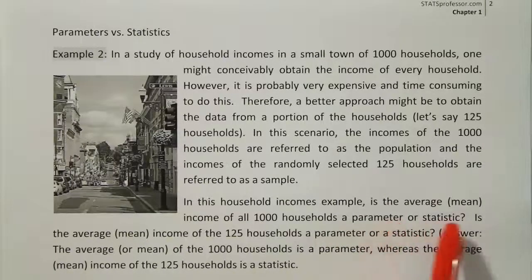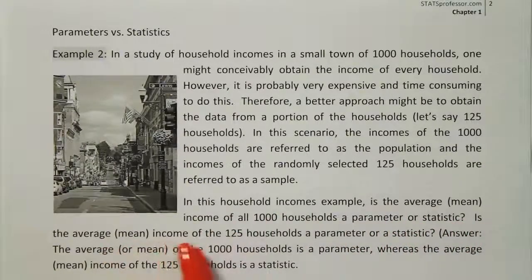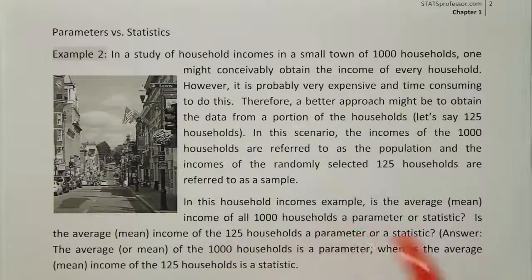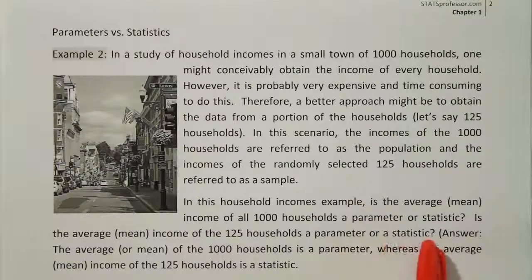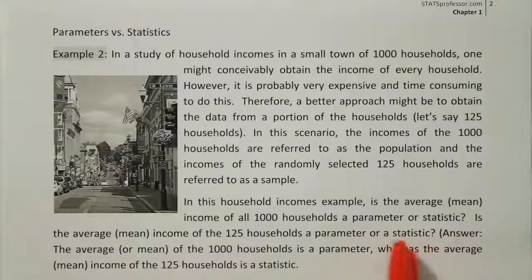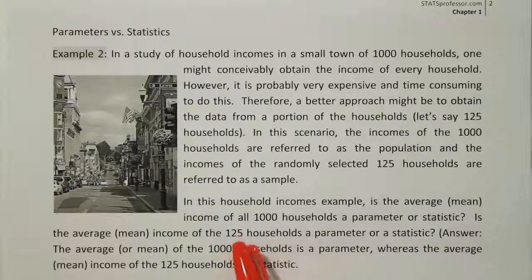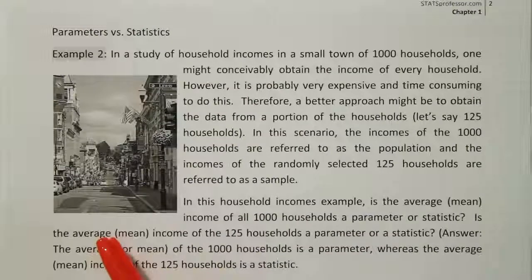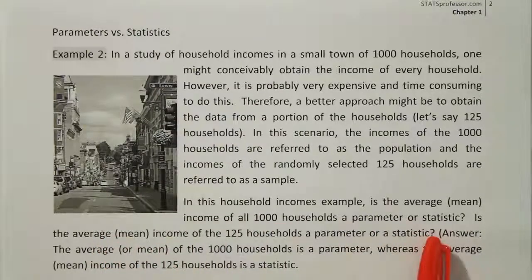Now, in the second question, we're talking about the average income of the 125 households. That's just a sample taken from our population. Try to remember: things that are derived from samples are statistics — S for statistic and S for sample, they go together. So if this is just a sample from our population, then the average calculated from that data becomes a statistic.